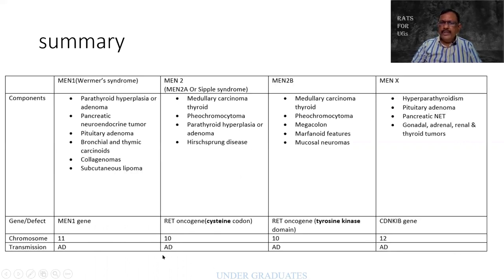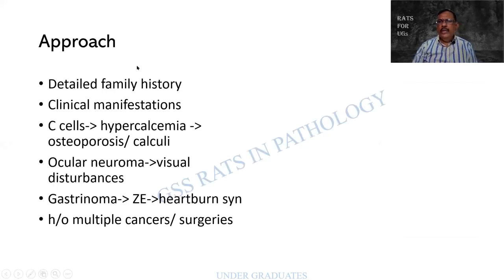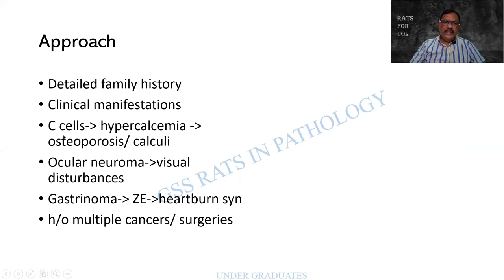A summary table is provided — please make note of it and study it carefully. When approaching a case of multiple endocrine neoplasia, a detailed family history is needed. Clinical manifestations should be assessed: is involvement limited to one organ or multiple? If C cells of the parathyroid are affected, there can be hypercalcemia, mobilization of calcium, renal calculi, and osteoporosis.